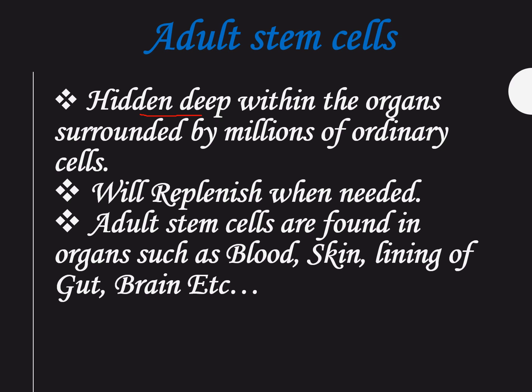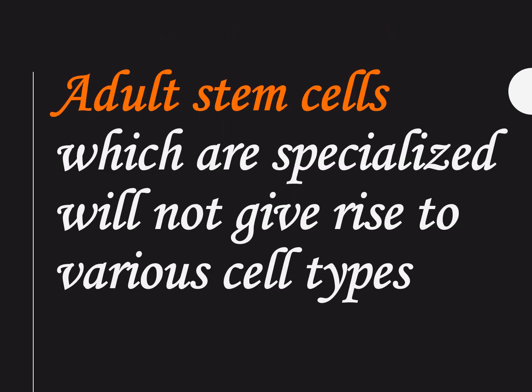This is why we are still struggling to find and eradicate cancer cells — once we can trace the cancer stem cell, we can eliminate it. Adult stem cells are hidden deep within organs, surrounded by millions of ordinary cells, and will replenish when needed. Adult stem cells are also found in blood, skin, and the lining of the brain. They are specialized and do not give rise to all cell types like embryonic stem cells; they give rise to one particular cell type.